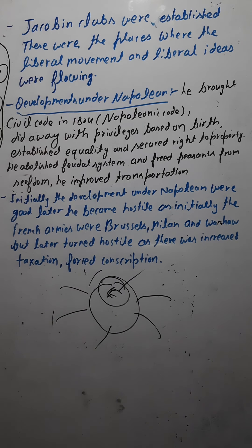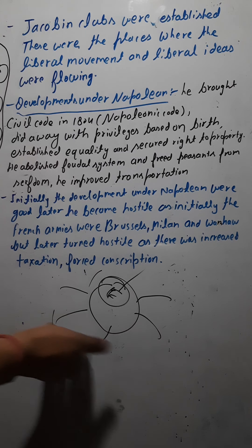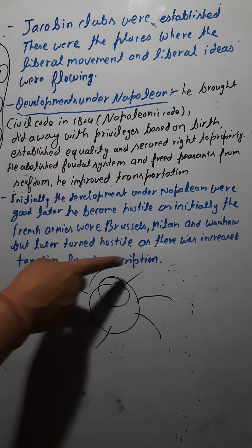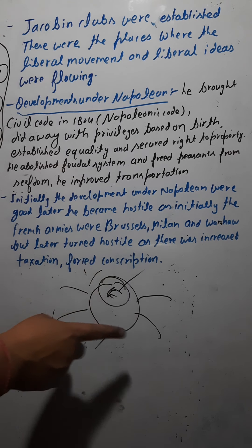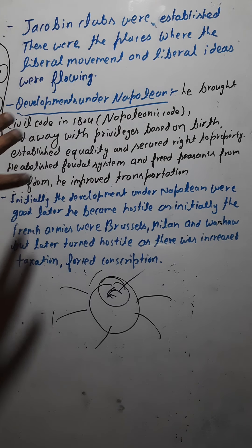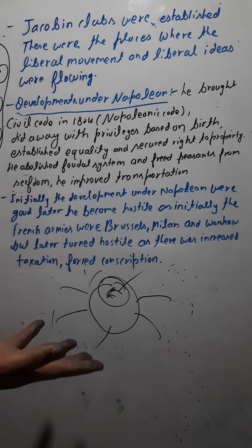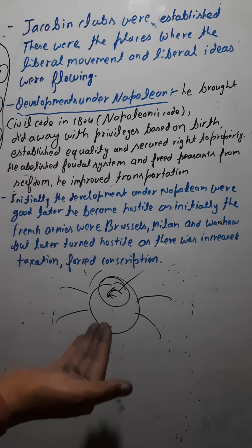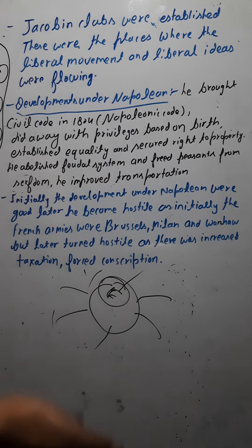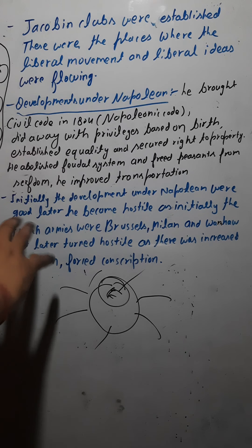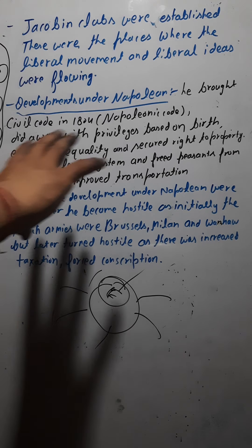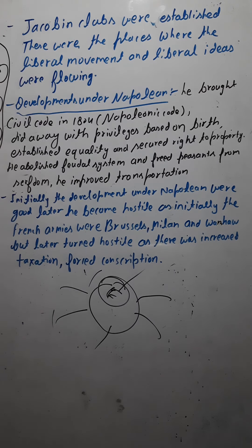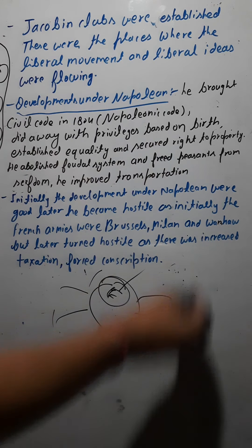But later, the French armies also became hostile. They increased taxation and enforced forced conscription — meaning every member of a family was required to serve in the army, even if they did not want to. These bad developments were not welcomed, and the countries where Napoleon was trying to expand his empire turned against him. This ultimately led to the downfall of Napoleon.